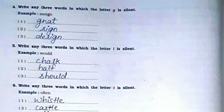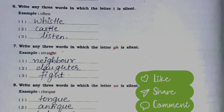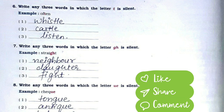Question five: Write any three words in which the letter L is silent. Answer: chalk, half and should. Question six: Write any three words in which the letter T is silent. Answer: whistle, castle and listen. Question seven: Write any three words in which the letter GH is silent. Answer: neighbor, daughter and fight.